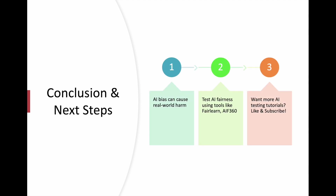In conclusion, from the real-life examples we learned that AI bias can cause harm in real life. Test AI fairness using tools like FairLearn and AIF360 to get the fairness score. If you want more AI testing tutorials, please subscribe to this channel, like this video, and share it. Don't forget to follow us on social media — links are in the description. Please comment and provide feedback. Thank you.